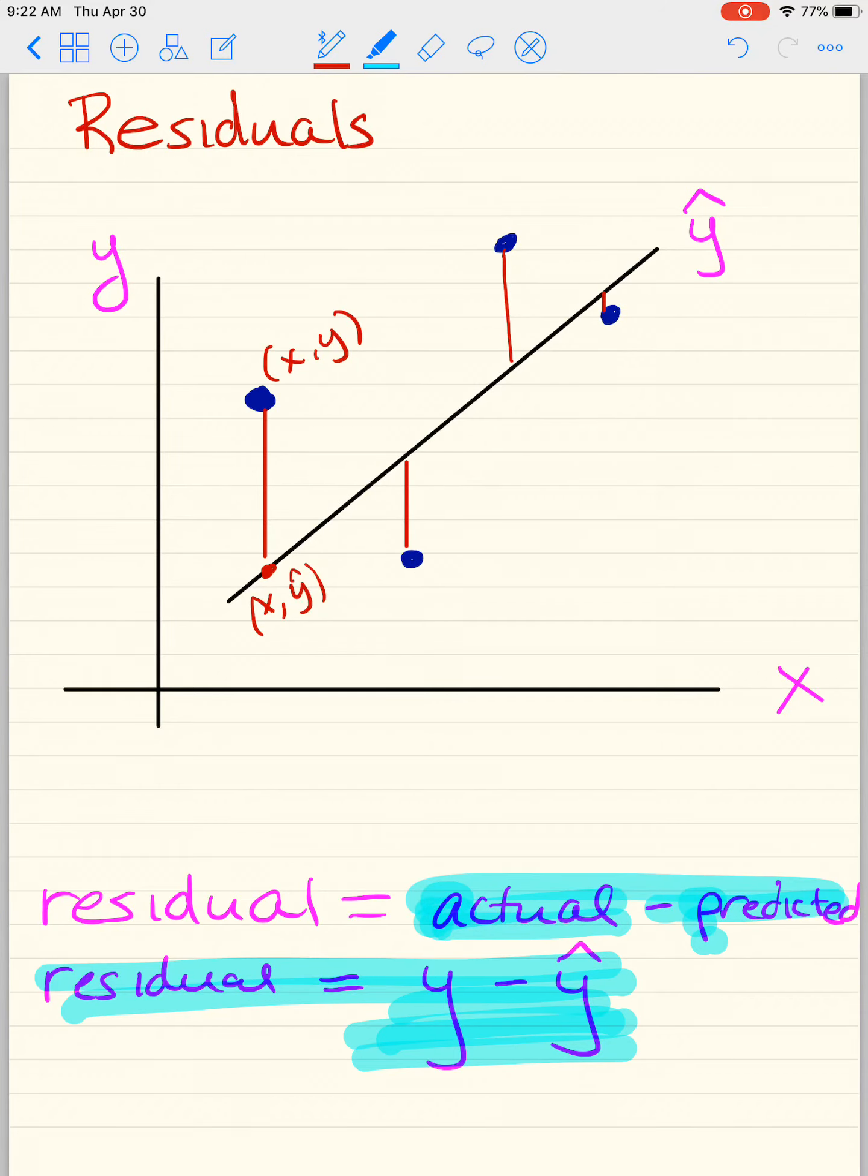Don't mix them up because typically in multiple choice answers, one of them is like seven and the other one is negative seven. So you have to make sure you have them in the right order. It's the vertical distance, and residuals are actual minus predicted. So I'm going to run through a few examples, basic examples on how to find the residuals.